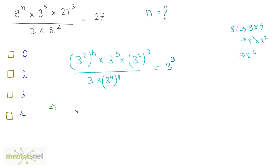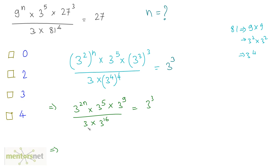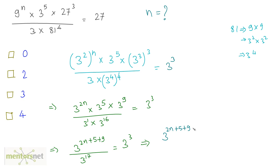This gives us 3 raised to 2n times 3 raised to 5 times 3 raised to 9 in the numerator — since 4 fours are 16, we have 3 raised to 16 in the denominator — all equals 3 cubed. Using the law of indices for multiplication, the numerator becomes 3 raised to 2n plus 5 plus 9, divided by 3 raised to 1 plus 16, which is 3 raised to 17, equals 3 cubed. Applying the division law gives 3 raised to 2n plus 5 plus 9 minus 17 equals 3 raised to 3.